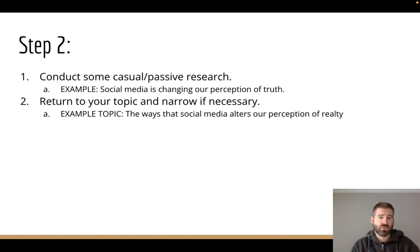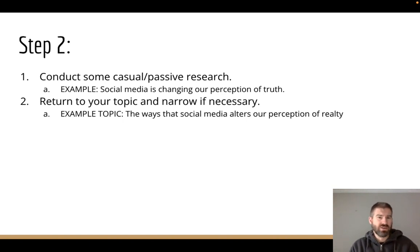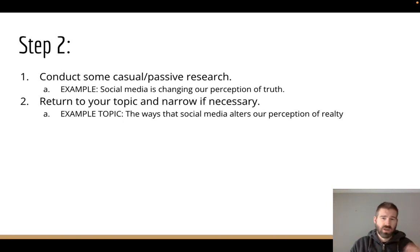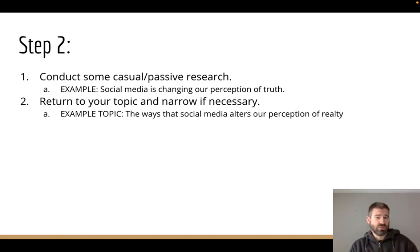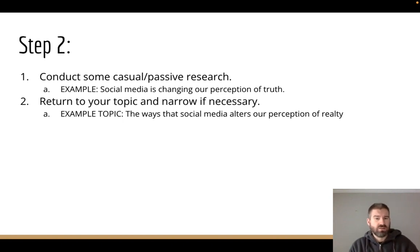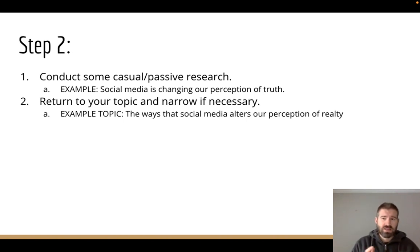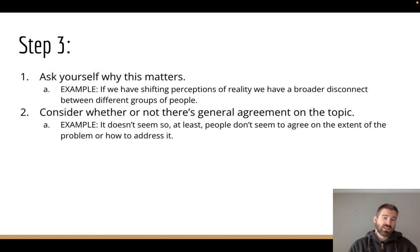The next part is to conduct what I call casual or passive research — going on YouTube, reading some blog posts, or reading things you wouldn't necessarily use in a research paper. You're trying to broaden your awareness. Wikipedia would be okay here because you're not going to cite it. Maybe what I find from this is that social media is kind of changing our perceptions of truth. Now I return to the topic and narrow it further — the narrow topic might be something like 'the way that social media alters our perception of reality.' I've moved from storytelling all the way to this.